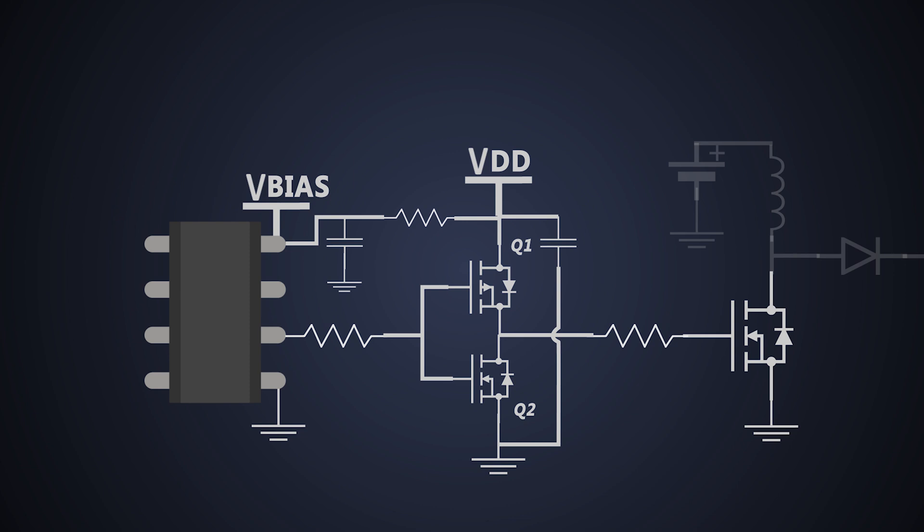Well, because of the inverting nature of this driver, it may cause false turn-on of the power device during power-up or power-down sequence. We can add a NOT gate at the input to avoid this. But this complicates the circuit and adds more cost. This is where the drawbacks of the MOSFET-based totem pole driver comes into picture.